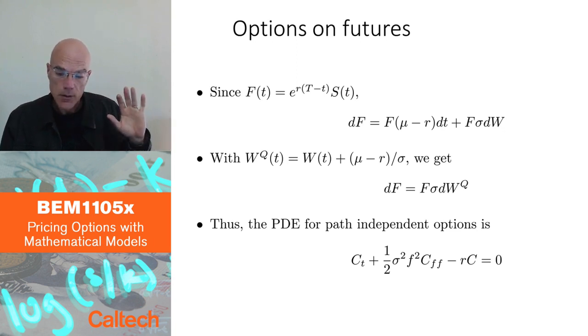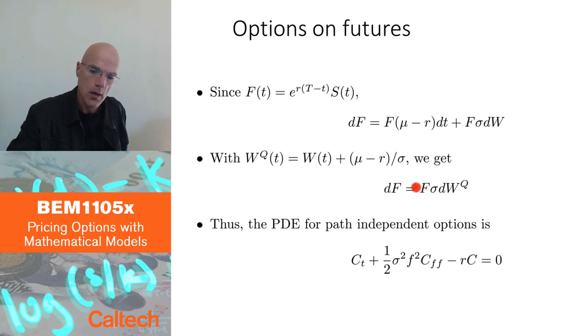So now when you apply the logic of Black-Scholes partial differential equation, if you do Ito's rule, there will be no r term, no drift term multiplying the first derivative. So in fact the partial differential equation is going to look simpler. There is one term less and it's going to look like this.